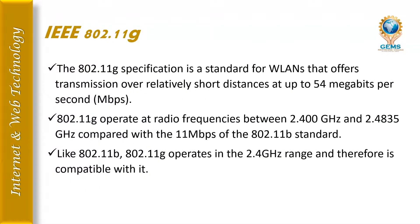IEEE 802.11g is the specification standard for wireless LAN that offers transmission over a relatively short distance at up to 54 Mbps. It operates at radio frequencies between 2.4 GHz and 2.483 GHz. Compared to the 11 Mbps of the 802.11b standard, 802.11g offers higher speeds. Like 802.11b, 802.11g operates in the 2.4 GHz range, making it compatible with 802.11b.